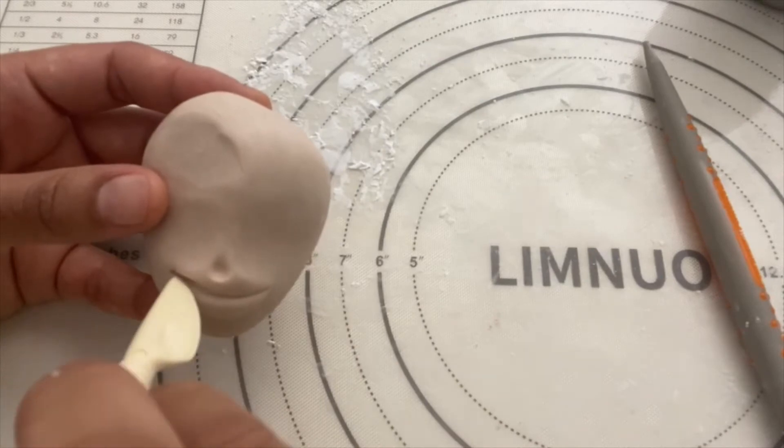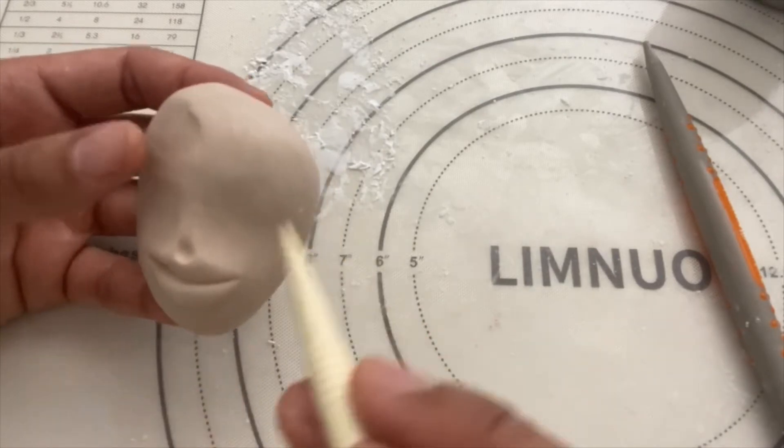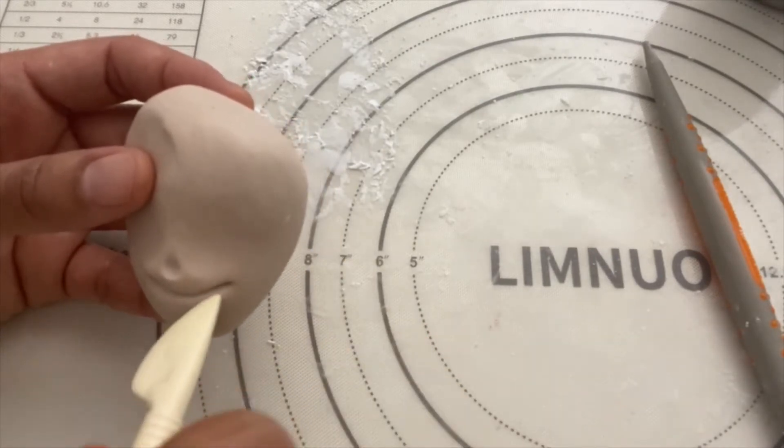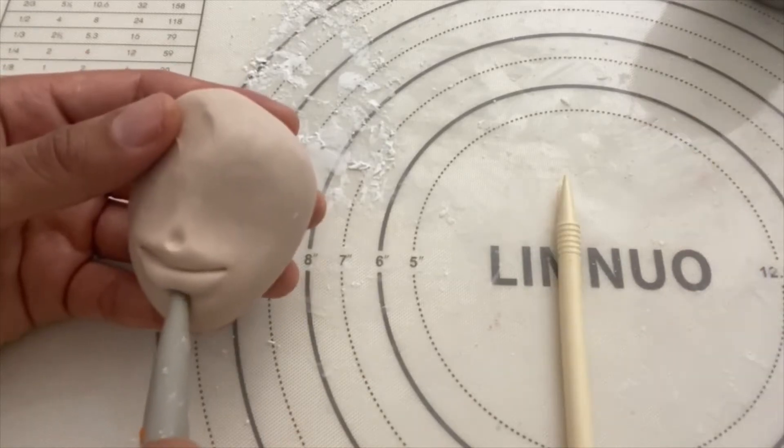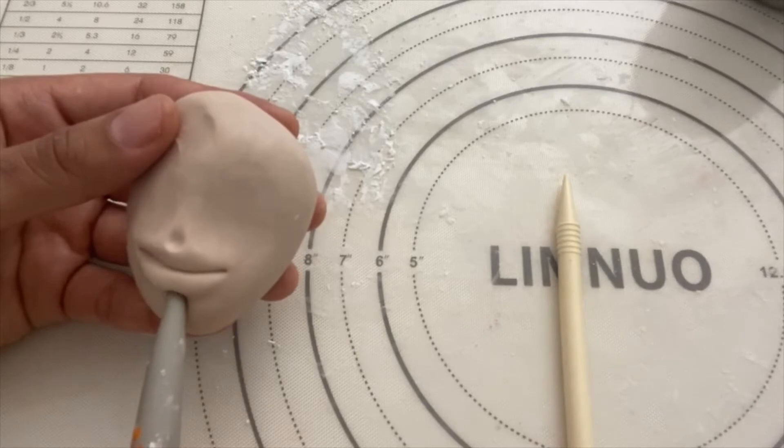The corners of the mouth tend to recess a little further back, so apply a little more pressure at the corners. And then begin to separate the top lip from the bottom lip, and then let's define the bottom lip a little. I'm just pushing in instead of pulling out.